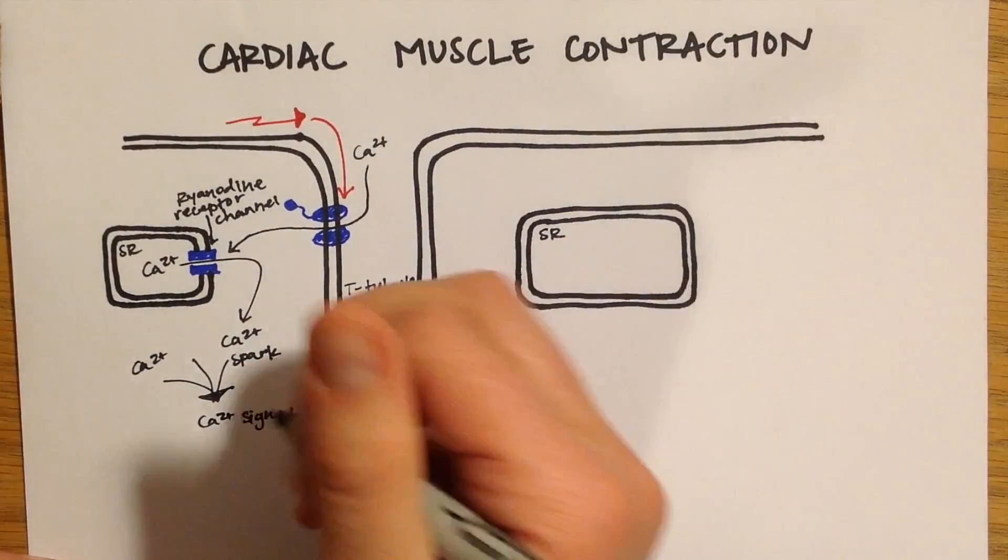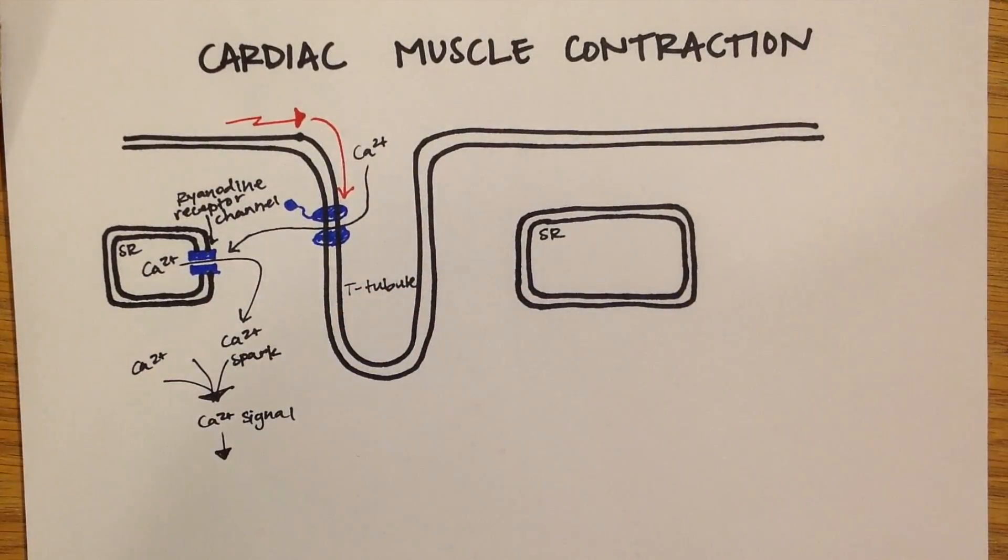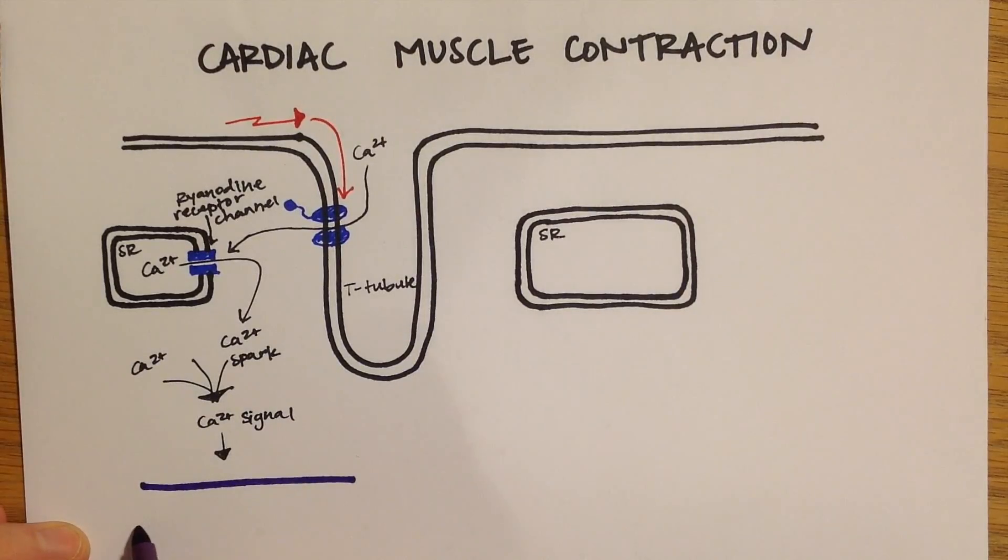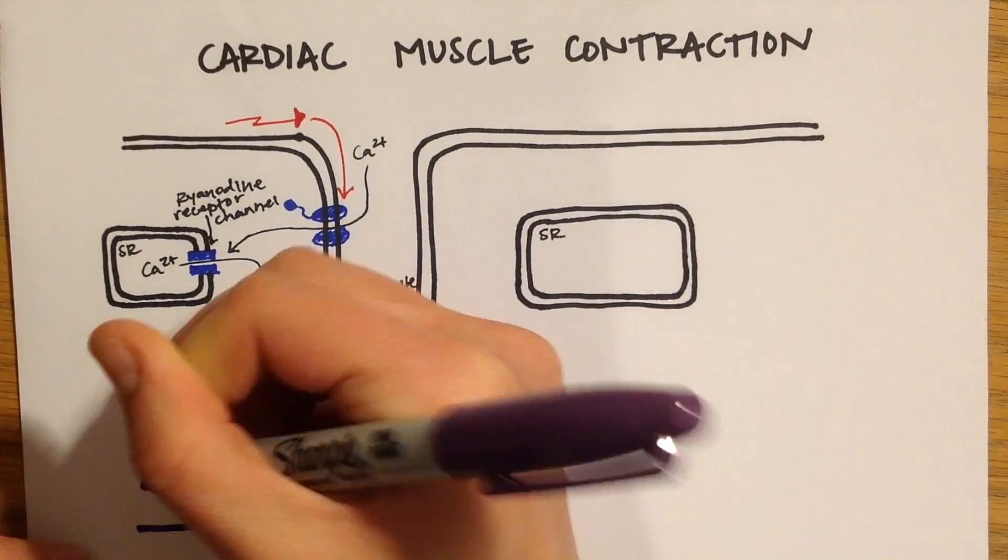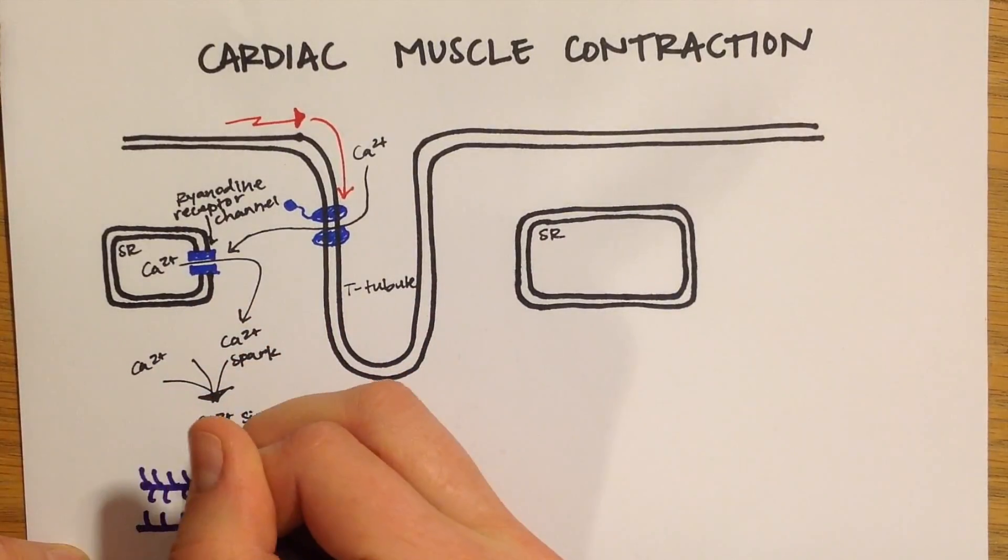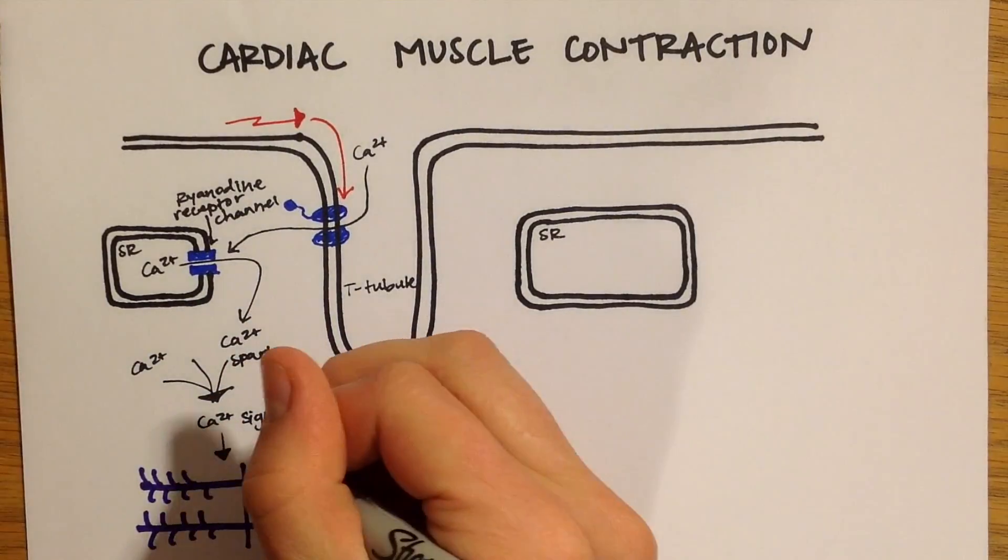Calcium ions then bind to troponin to initiate contraction of the actin-myosin complex. The purple structures I am drawing will represent the myosin and the red will represent the actin in the contracted form.